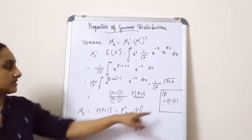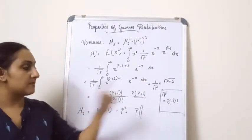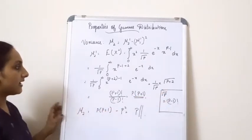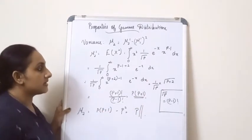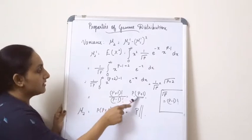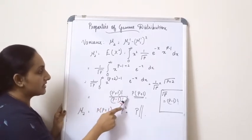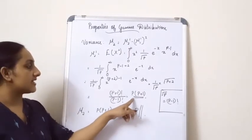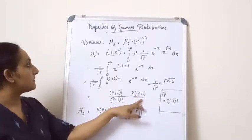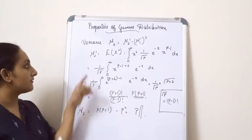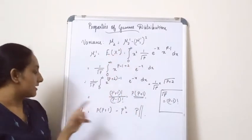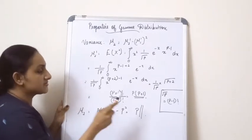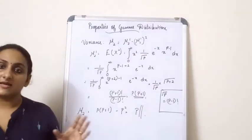Using the result that Γ(p) = (p−1)!, we write Γ(p+2) as (p+1)! divided by Γ(p) = (p−1)!. Carrying out the calculation gives p(p+1). So mu2' = p(p+1). Substituting into the variance formula: Var = p(p+1) − p² = p(p+1) − p² = p. Therefore, the variance of a gamma distribution is p.